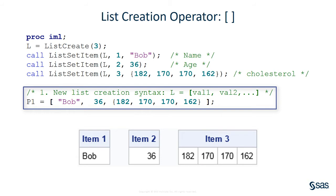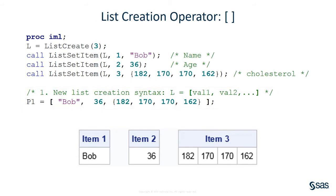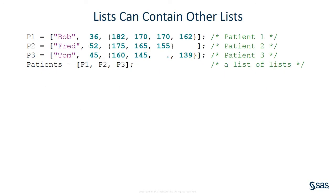In the program on this slide, P1 is a list that contains three items: a string, a scalar number, and a vector. You can also create a list of lists. Perhaps Bob is not the only patient in your study. In the program on this slide, a list is created for each of three patients. Then a list of lists, called patients, is created, which contains data about the three patients: Bob, Fred, and Tom.